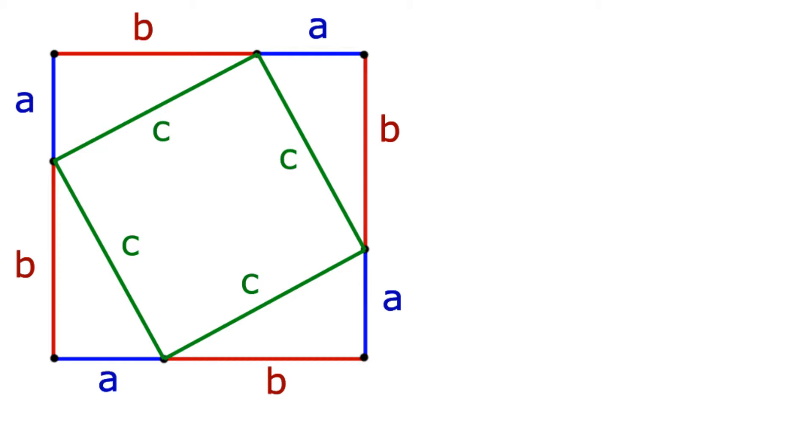The area of the large square is a side multiplied by itself. That's A plus B squared. Now if you don't already know it, the area of a triangle is a half of the base times the height. So each triangle has an area of half AB.